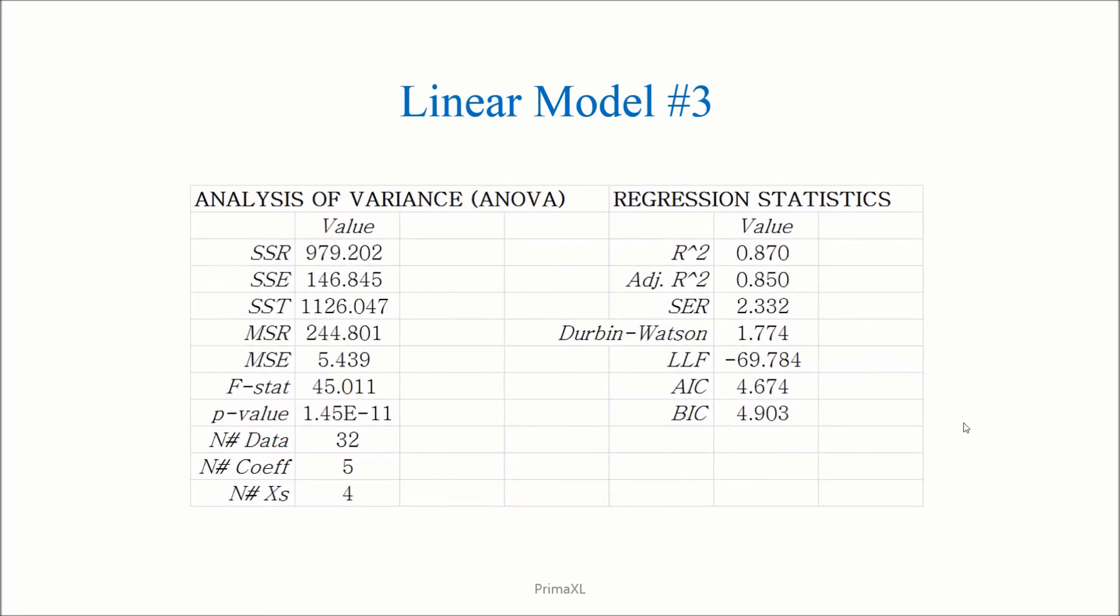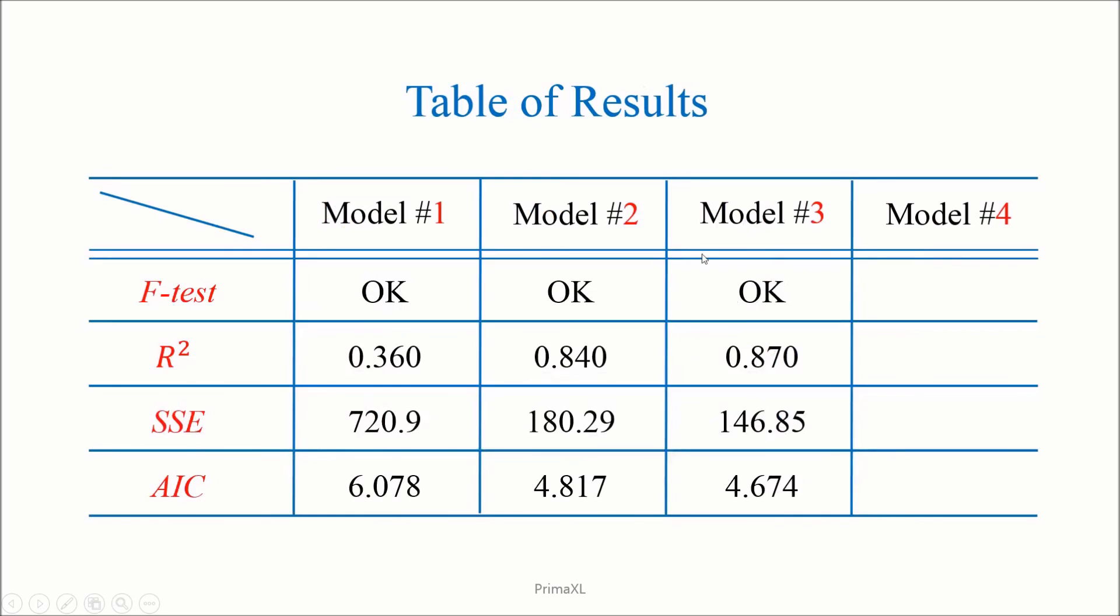The diagnostic results are as shown here. Back to our summary table, we can see that R-square has increased while the SSE and the AIC have decreased. Again, model number 3 is an improvement over the previous model.